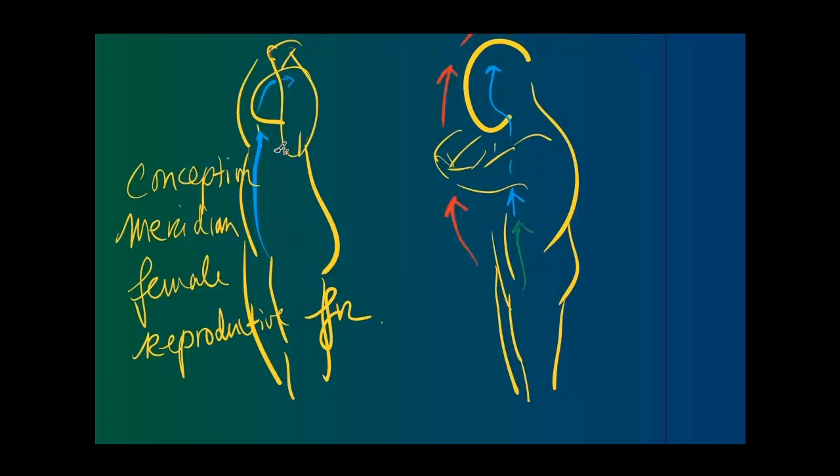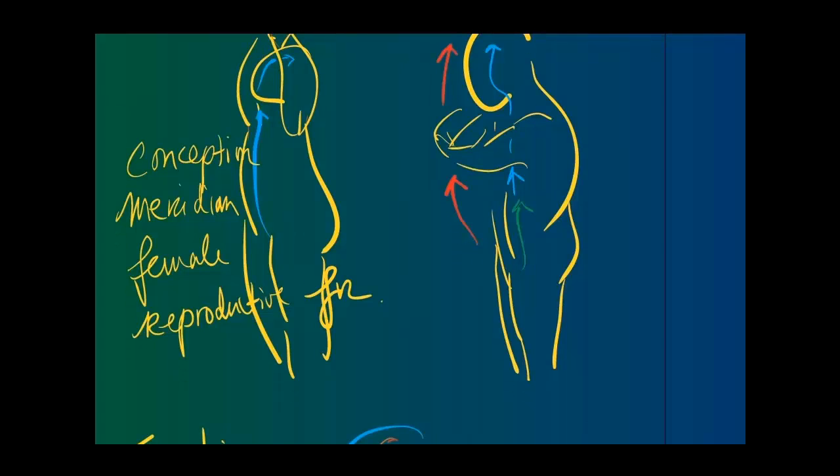As you can see, the Qi Gong movement not only works with the physical body of stretching the spine, but it is really moving the Qi fluid through the meridian so it could break any blockage.